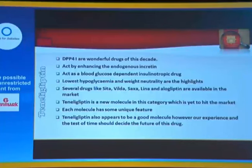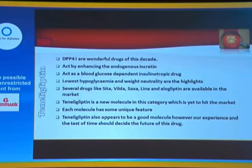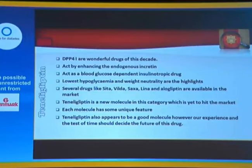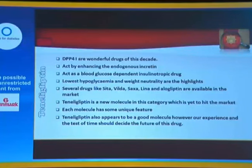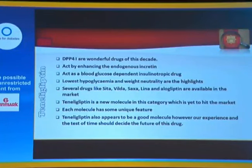To introduce this particular topic: as you know, DPP-4 inhibitors are wonderful molecules of this decade. They act by enhancing the endogenous or physiological levels of incretin, and act as a blood glucose-dependent insulinotropic drug with lowest hypoglycemia and weight neutrality — which are the highlights of this molecule. We have already had some experience with other molecules like sitagliptin, vildagliptin, saxagliptin, linagliptin, and alogliptin. But we are yet to have hands-on experience with this particular new molecule, which is yet to be launched here in the Indian market but is already available in the Japanese market for the last two years. Each molecule has something unique and probably that is why so many gliptins are still in the market, and this also appears to be quite a good molecule. However, the experiences of our own as well as the test of time should decide the fate of the molecule.